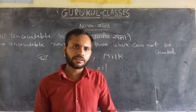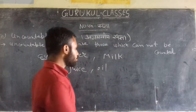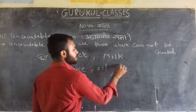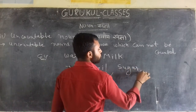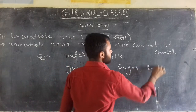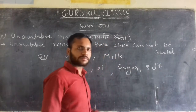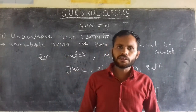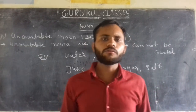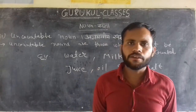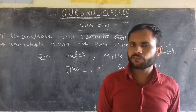You can take sugar, salt — these things are uncountable because it is not possible to count them individually, because they are liquid or granular in nature.